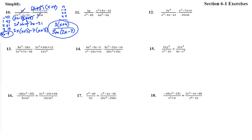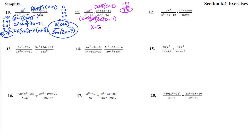Number 11. This trinomial has leading coefficient 1, so it's (x)(x). Multiplying to negative 14: 1 and 14, 2 and 7. We need to add to positive 5, so that's plus 7 and minus 2. Next, we take out a 3a from the second piece, leaving (2a − 1). The third piece is a difference of squares: (x − 7)(x + 7). Now the 3a's cancel, the (x + 7)'s cancel, leaving (x − 2) over (x − 7)(2a − 1).